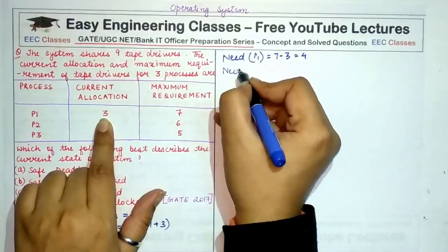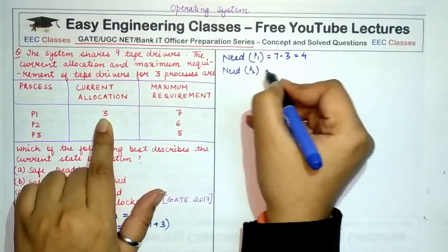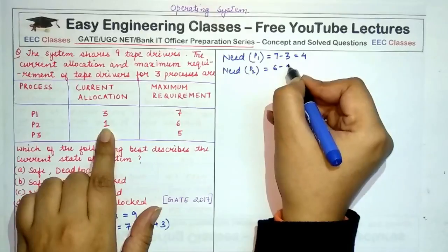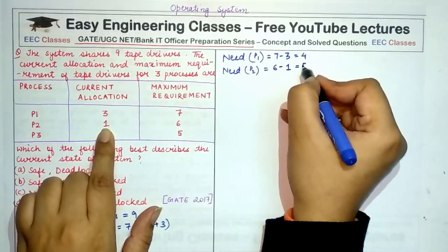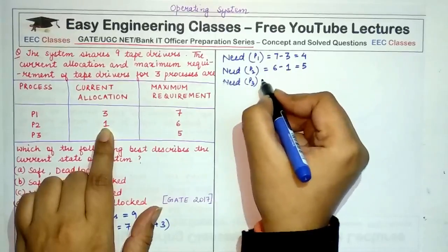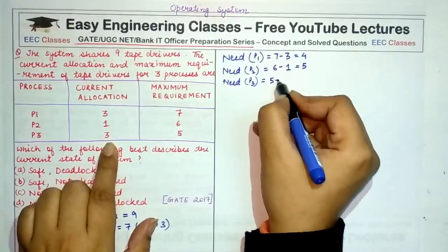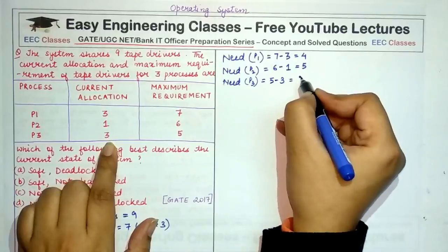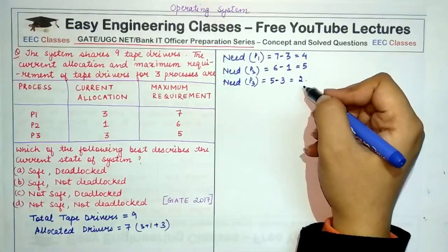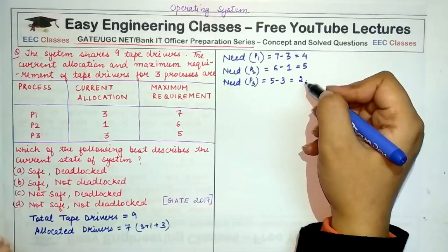Similarly, need of P2 is equal to its requirement 6 minus its allocation 1 which is 5. And need of P3 is equal to 5 minus 2.